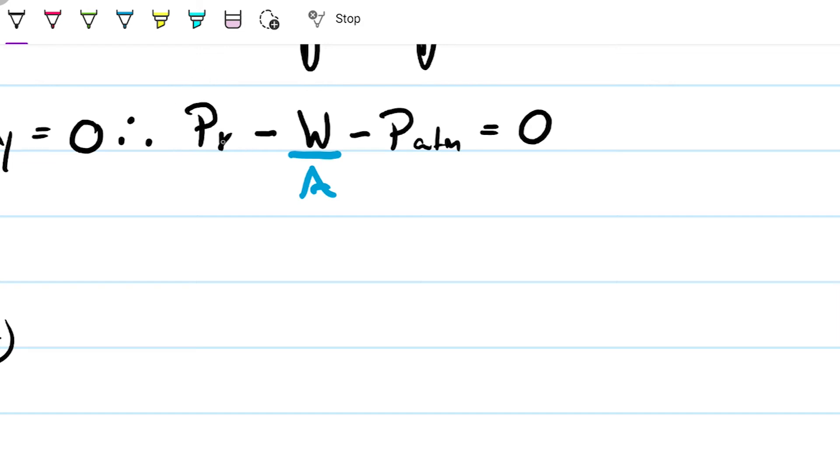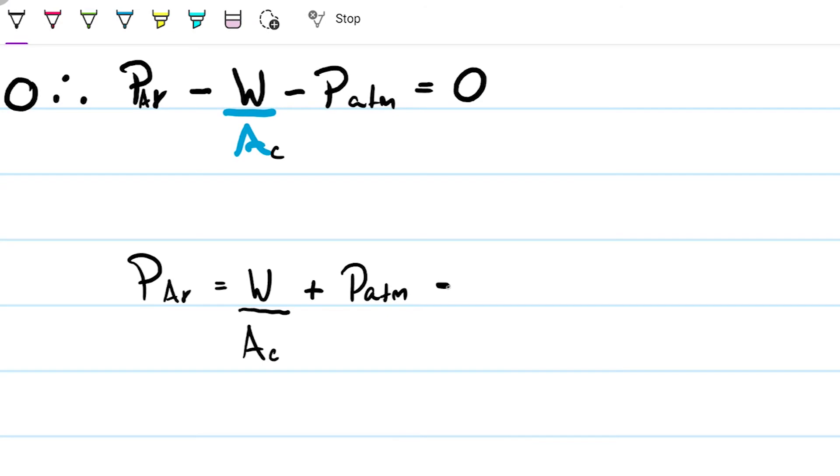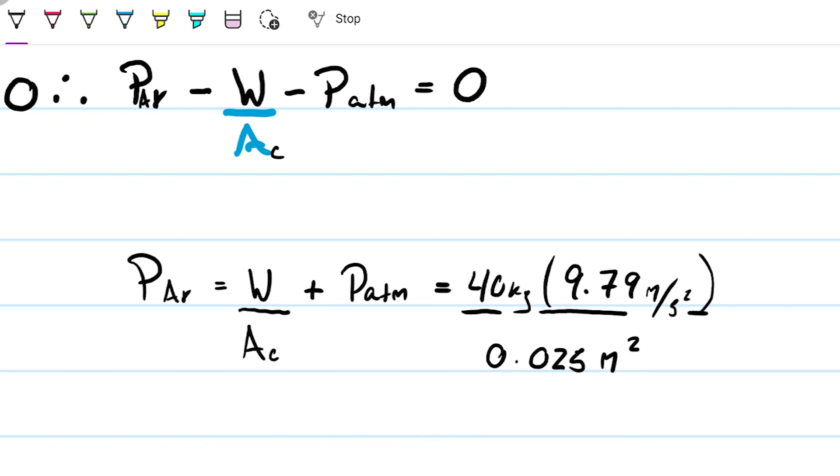So if we want to find out what's the pressure of argon, then pressure of argon will be equal to the weight of the piston divided by the cross-sectional area, plus the pressure of the atmosphere. So in this case here, what is the weight? Well, it's going to be mass times gravity. Mass is 40 kilograms. Acceleration of gravity, they tell us it's 9.79 meters per second squared. If you multiply kilograms per meters per second squared, according to Newton's second law, that's going to give us Newtons. And then if we divide that by an area, in this case we have 0.025 meters squared, we're going to get a pressure in pascals.